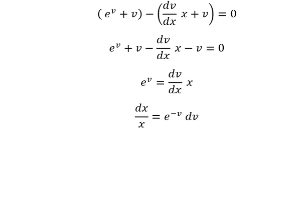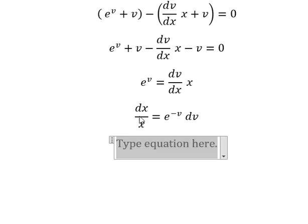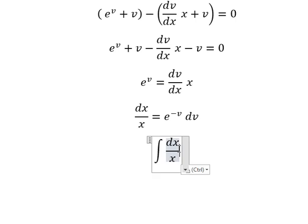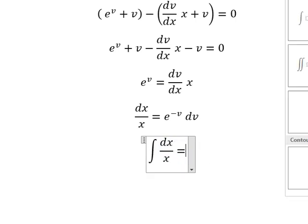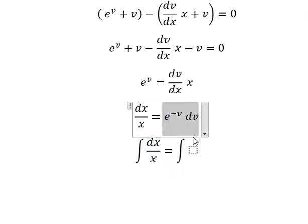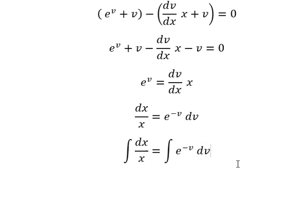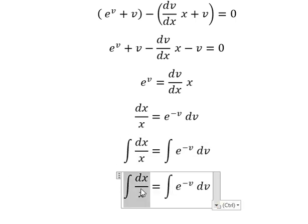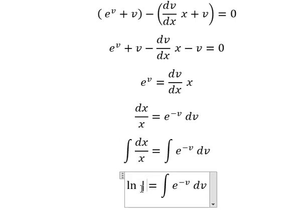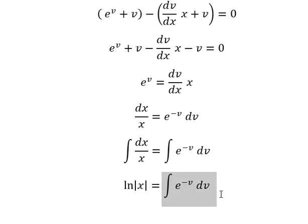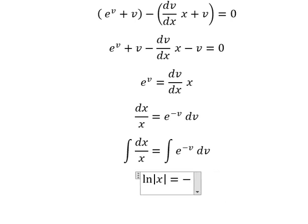Next, we integrate both sides. This gives us ln of the absolute value of x equals negative e to the power of negative v plus c.